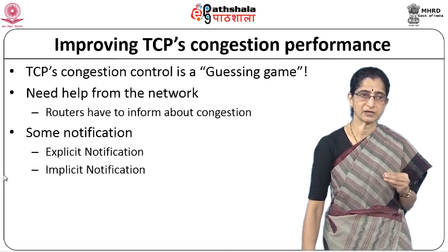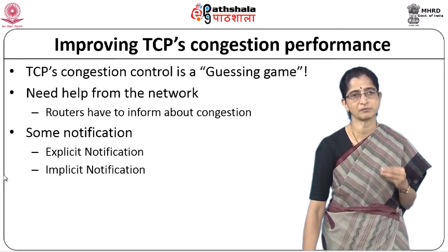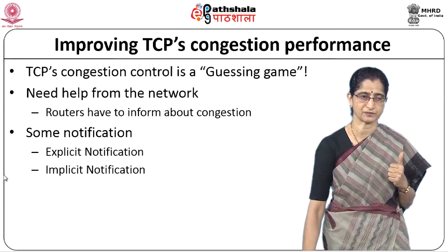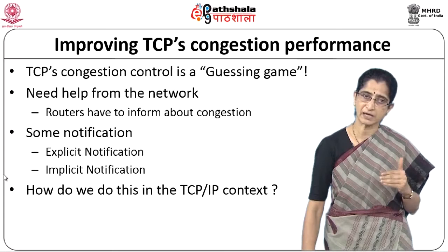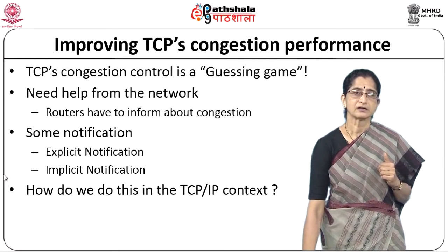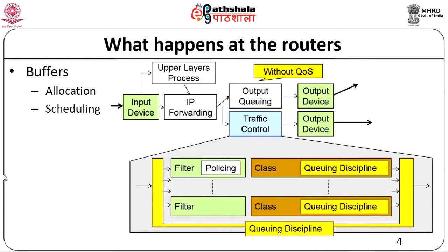How can this notification be given? Either it has to be an explicit notification from the router or some kind of implicit notification. Both mechanisms can be used. To understand this, let us look at what happens at routers. Routers have buffers at both input and output. Packets come into the buffers, are queued, and then scheduled for being sent out on the different output ports. If there is QoS, traffic control also takes place.